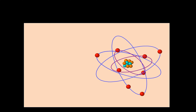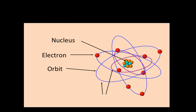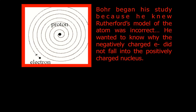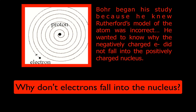Let's consider this diagram of the atom — the nucleus around which electrons travel in orbits. Bohr began his study because he knew Rutherford's model of the atom was incorrect. He wanted to know why the negatively charged electrons did not fall into the positively charged nucleus.